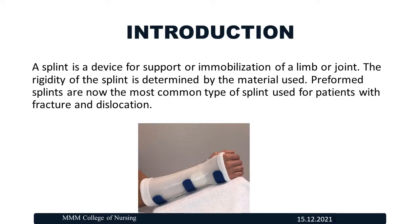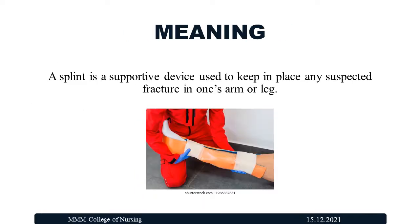Due to accident, assault, and injury happening in our daily life, to take care of patients immediately, a splint is very helpful to mobilize patients from one area to another. It is a device used for the immobilization of the limb and joint. A splint is a supportive device used to keep in place any suspected fracture in one's arms or legs.